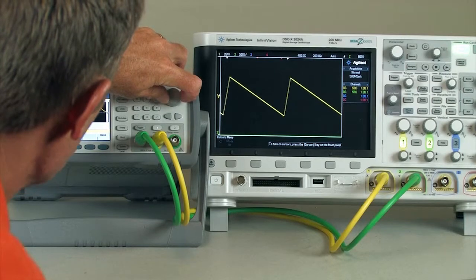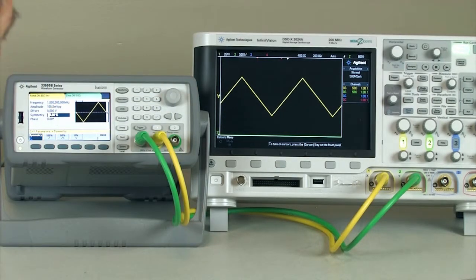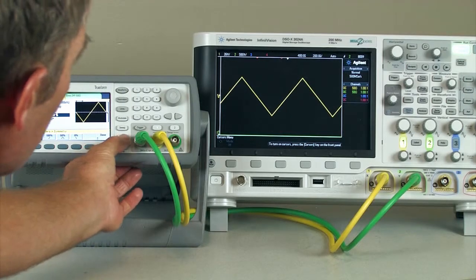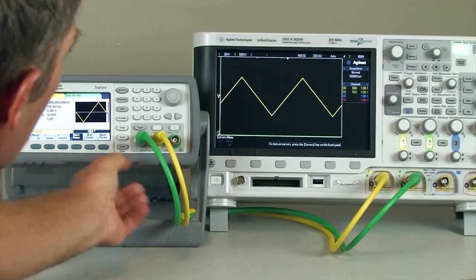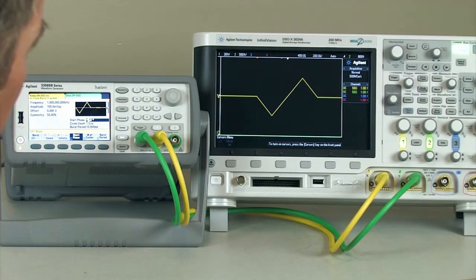Okay, so what I want to do now is I want to take a look at each of these waveforms in a little bit more detail, and the way we're going to do that is we're going to put the function generator into the burst mode, so we see a single cycle of the waveform. Okay, so this is our triangle waveform.